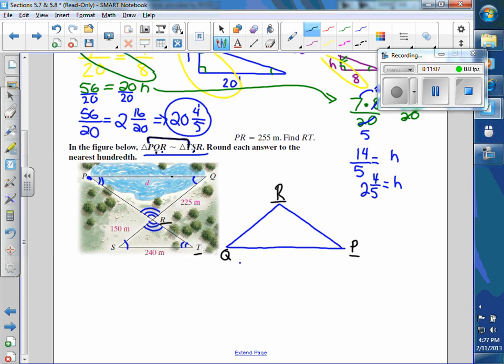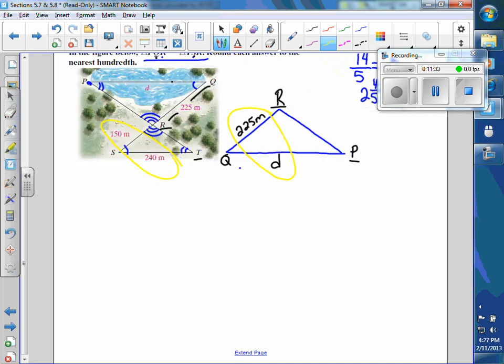Now I'm going to take the missing values. From R to Q is 225 meters, so I put it on this picture. The missing value from P to Q is D. So I'm going to set up a ratio here with comparing 225 to D like I compare 150 to 240. So that's going to be my work. I'll say 150 compares to 240 as 225 compares to D.